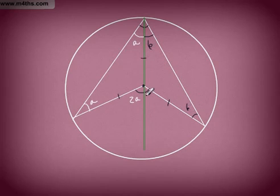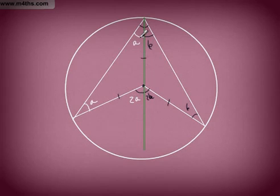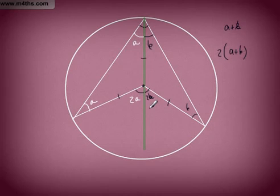The sum of the interior angles is going to be the exterior one. What we're going to have — this is going to be 2B. So these two added up are going to be this one right here, because angles on a straight line equal 180, and angles in a triangle equal 180. What we can quite clearly see here now is that the angle at the top is A plus B, and then the one at the centre is going to be 2A plus 2B. So, angles at the centre are double that of the circumference.